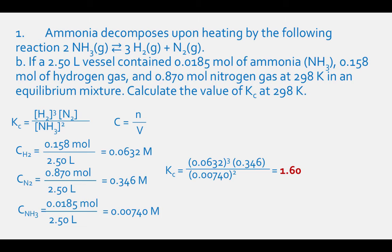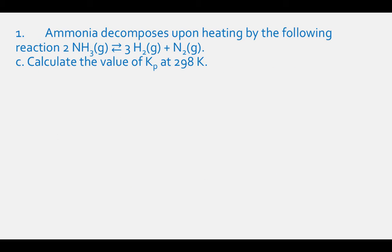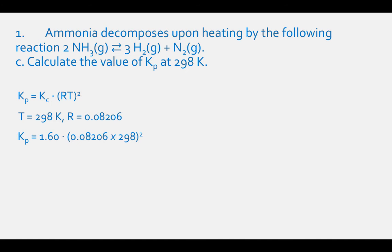To solve Part C, use the equation from Part A: Kp = Kc × (RT)². Plug in Kc = 1.60, R = 0.08206, and T = 298 K. Kp = 1.60 × (0.08206 × 298)² = 957.